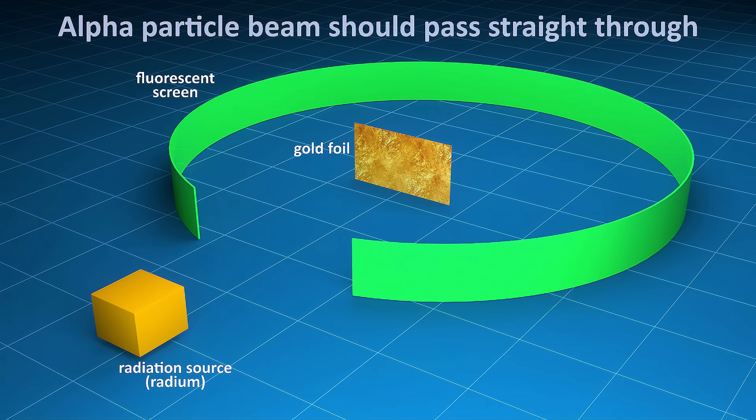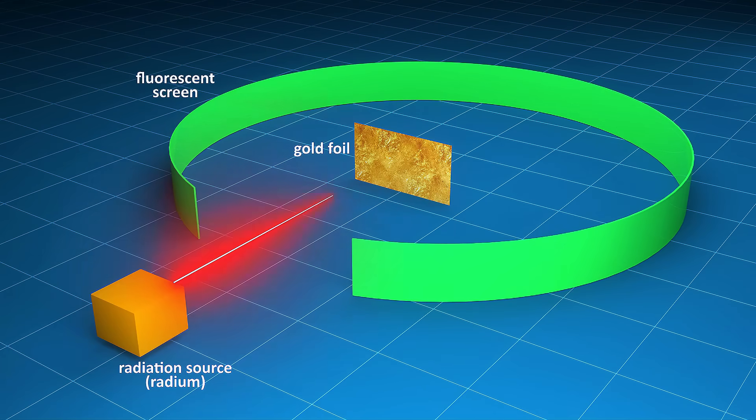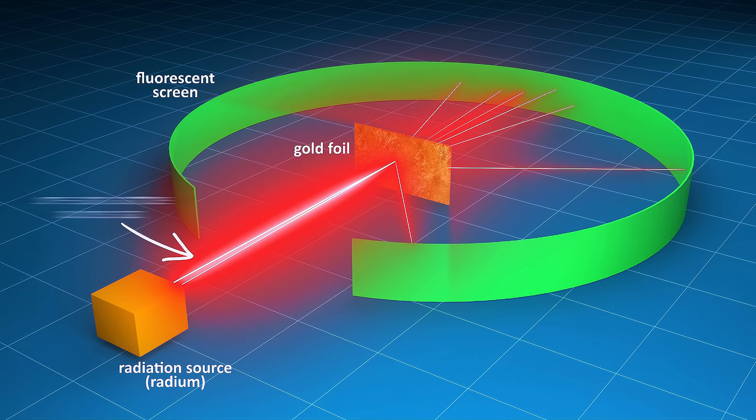When Rutherford conducted this experiment, what he found was that while most of it did pass right through, some of the alpha particles were deflected at large angles, and a very small fraction of them even bounced back completely.